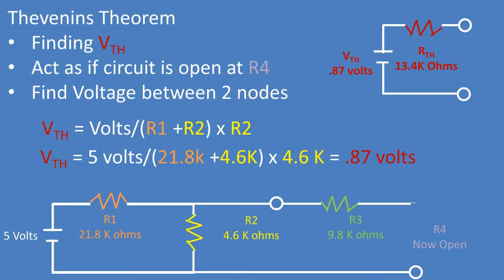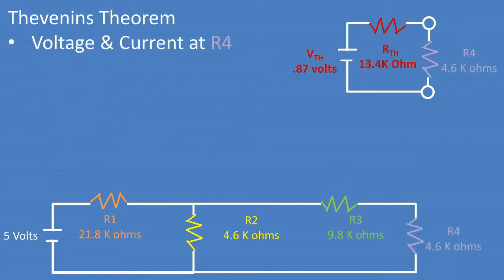So you're probably thinking, great, we have a Thevenin equivalent circuit. What is this used for? We can use this to solve for the voltage and current at resistor 4. The advantage of the Thevenin equivalent circuit is that you can plug in any resistance value for resistor 4 and quickly get an answer.